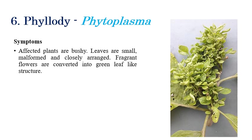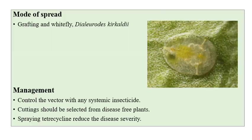Phyllody is a phytoplasmal disease. The most prominent symptom is malformation or shrinking of leaves — scientifically, all leaves are converted into a very small green leaf-like structure, with greatly reduced leaf size. The leaves shrink into a green leaf-like structure giving a bushy appearance. This phytoplasmal disease is transmitted by whitefly and also through grafting.